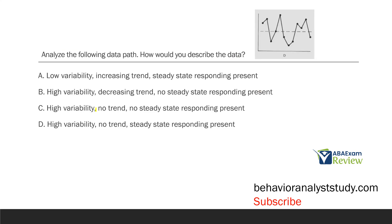Analyze the following data path. How would you describe the data? This is a pretty straightforward data analysis question. In ABA, we use visual analysis. The reason we like charts and graphs so much is they're very easy to visually analyze and easy to explain to stakeholders. You can quickly look at this graph and get a good idea — without knowing anything about the target behavior — what is occurring in this scenario. Let's look at our path. We start right above this average line, which would be maybe our level.